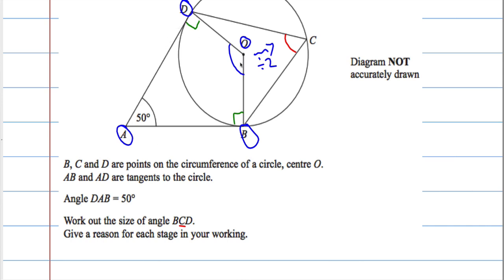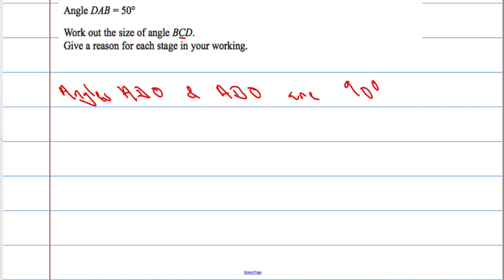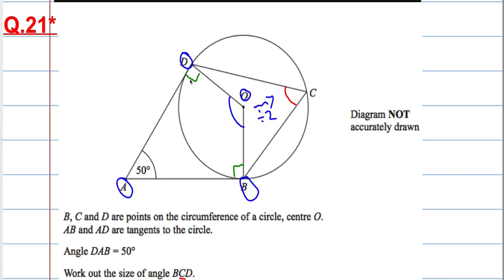Angle ADO and angles ADO and ABO are 90 degrees. And the reason, I've got to give a reason, the reason is angle between radius and tangent. So the angle between a radius and a tangent must be 90 degrees.